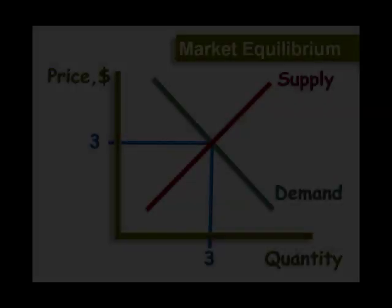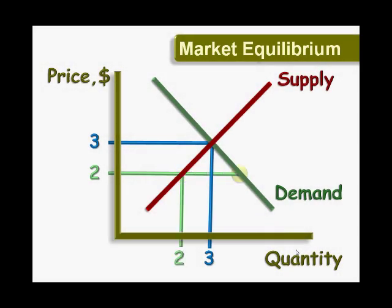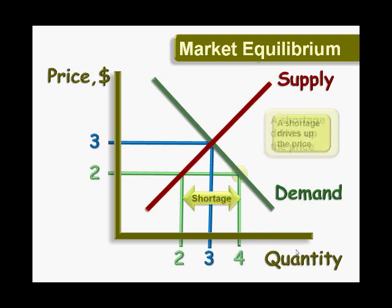If the current market price is below equilibrium, consumers will demand more units than what firms are willing to offer. This means a shortage exists. Consumers can't find everything they want. This leads to a bidding process which drives up the price.